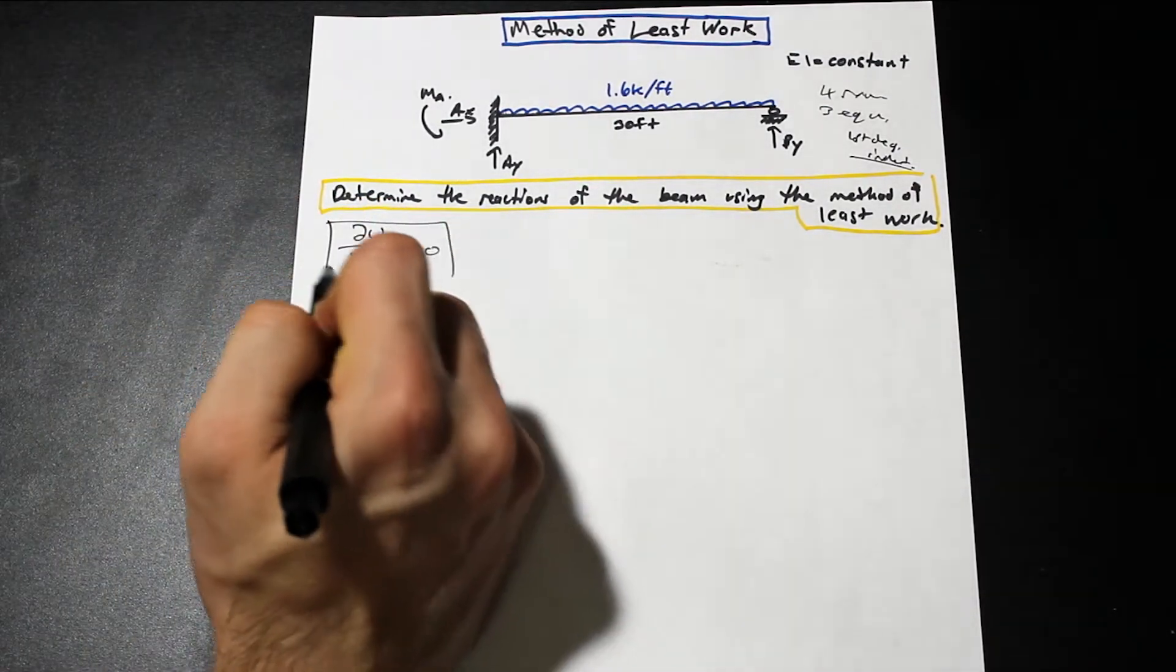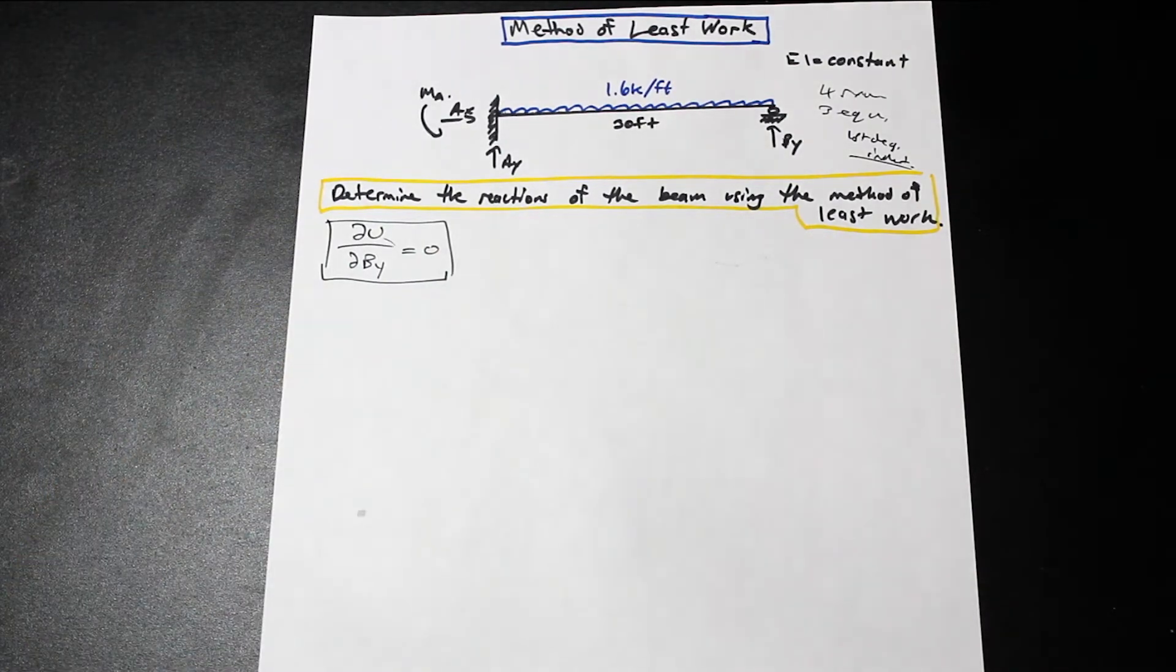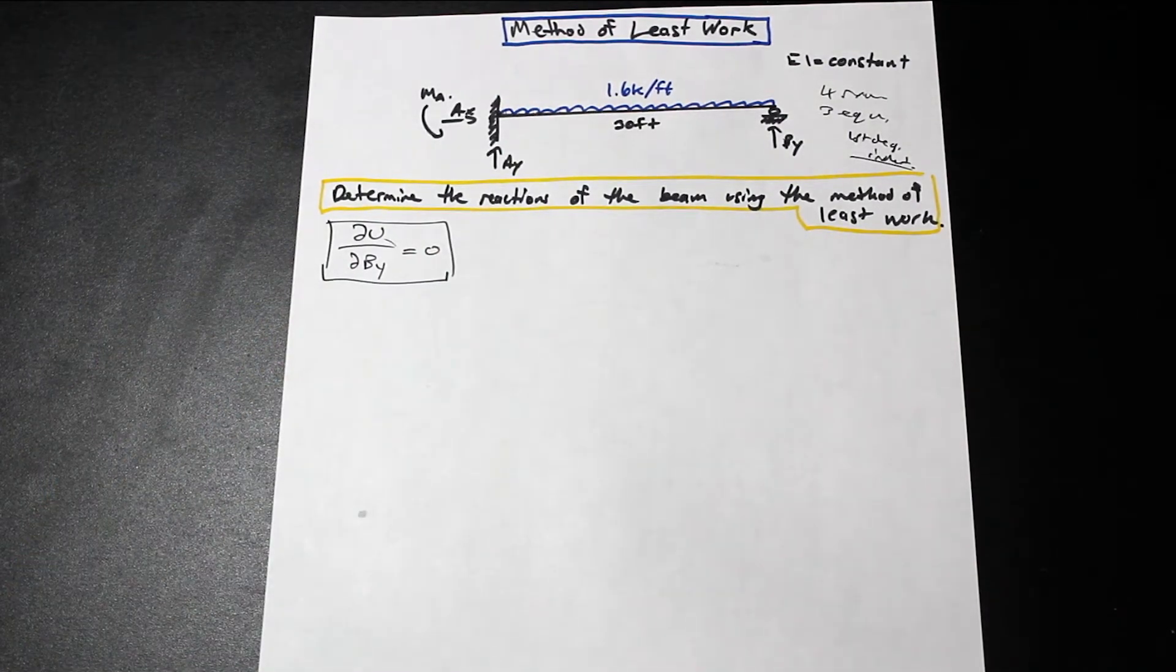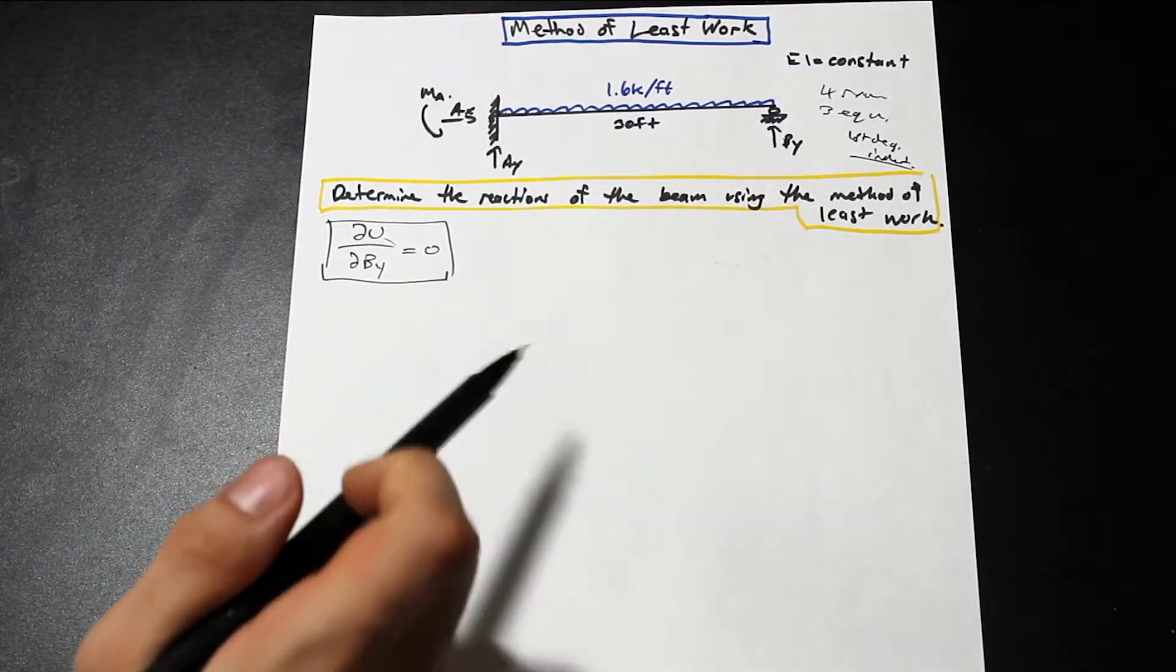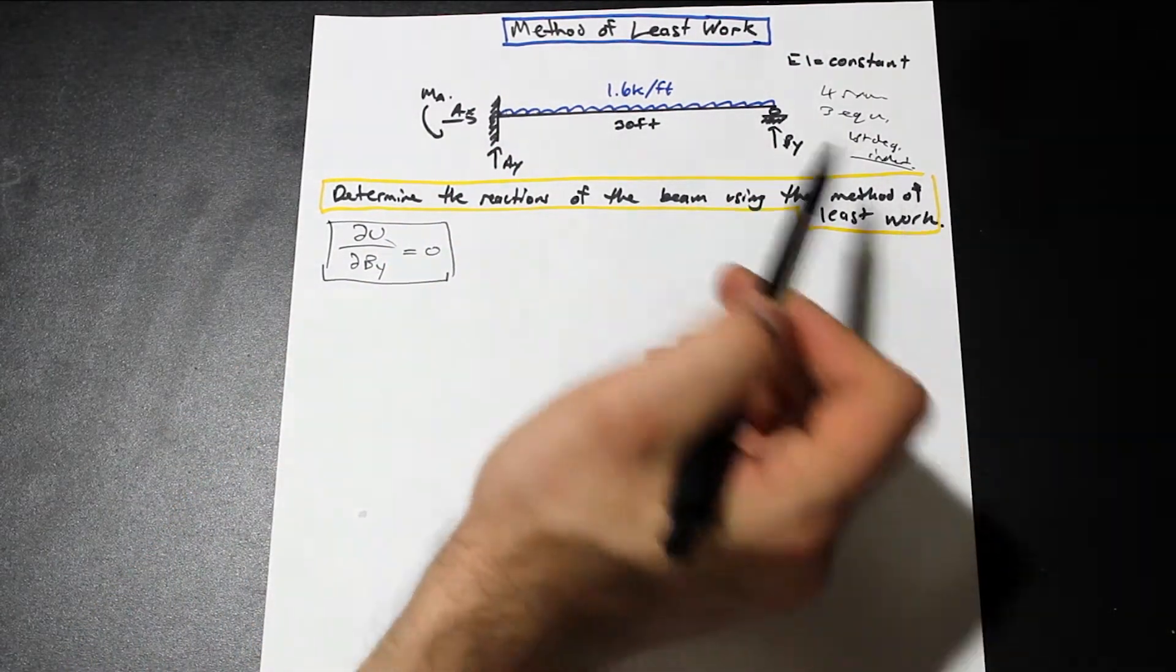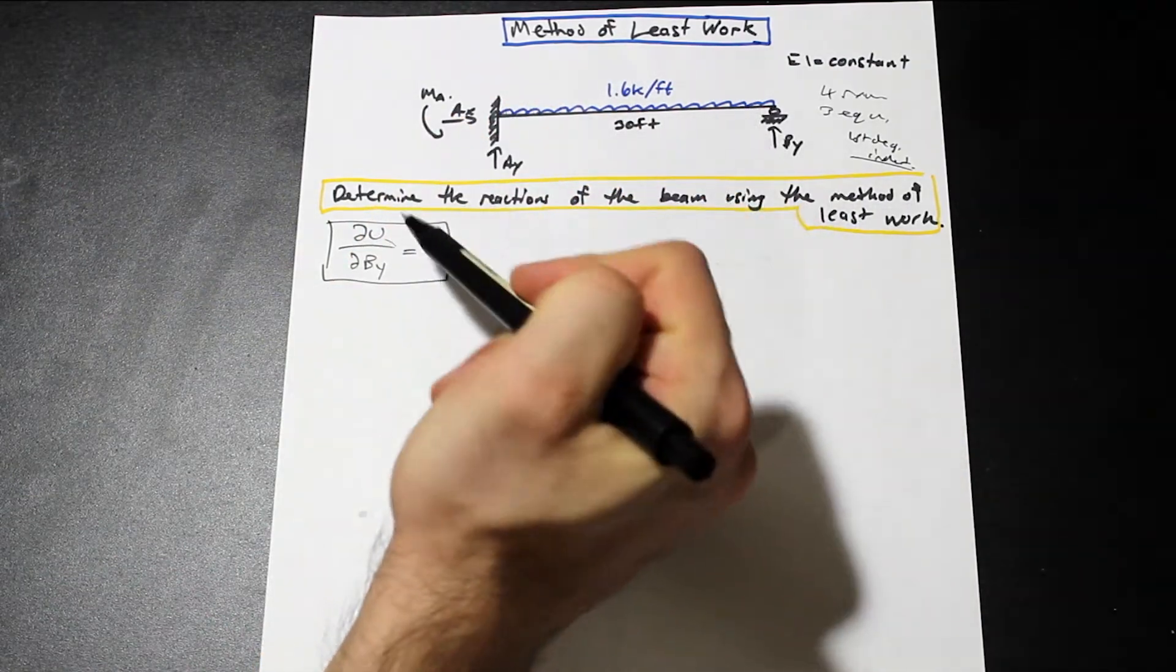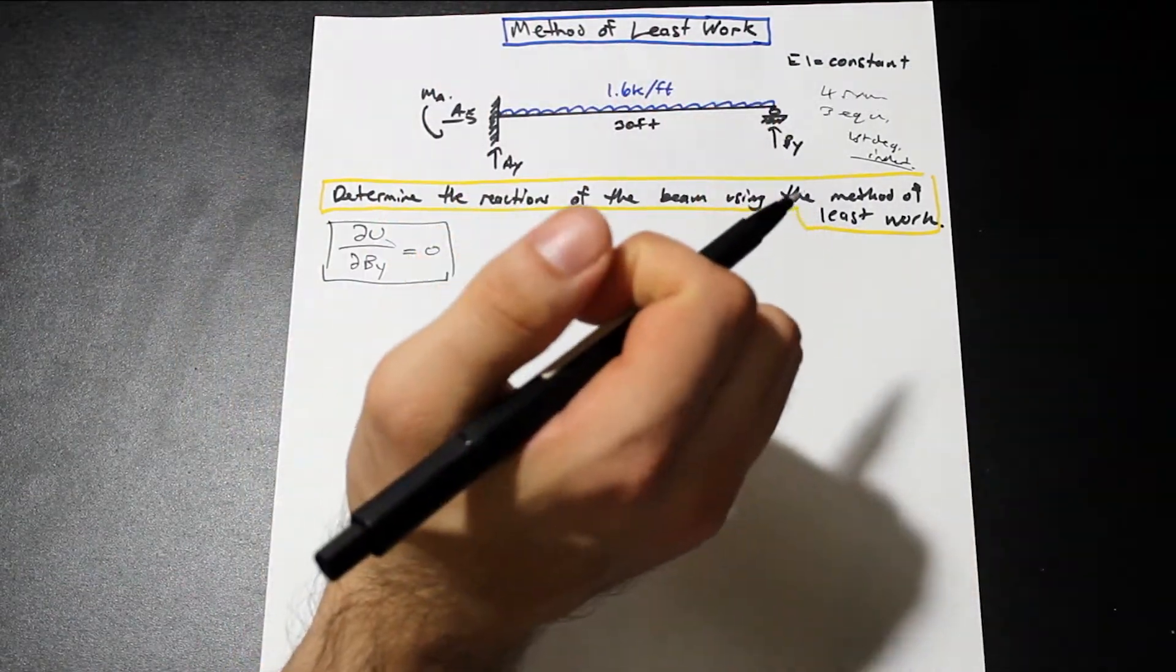So that's where we start. We have to understand that this is kind of like a compatibility equation. So what we've done is we've created another equation that we can use to solve our problem with. So now that we have this, that's just a really kind of basic introduction to what it is. There's more derivation, but we'll go over it when we answer the question.